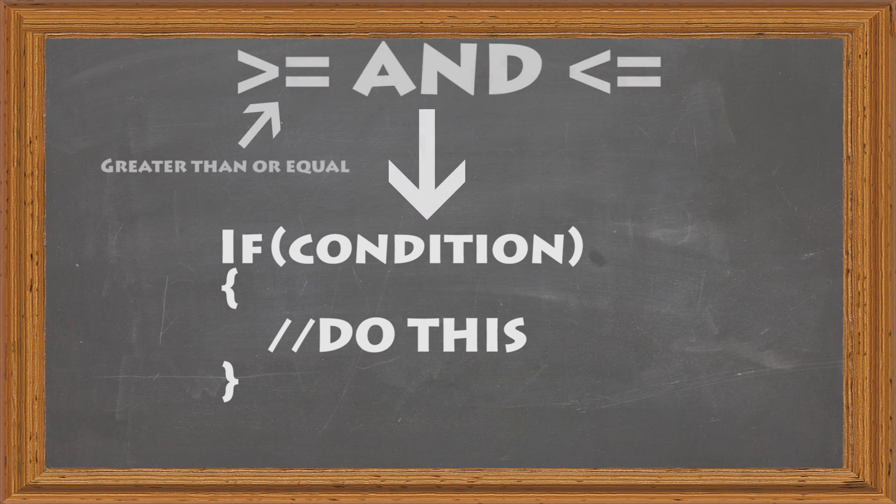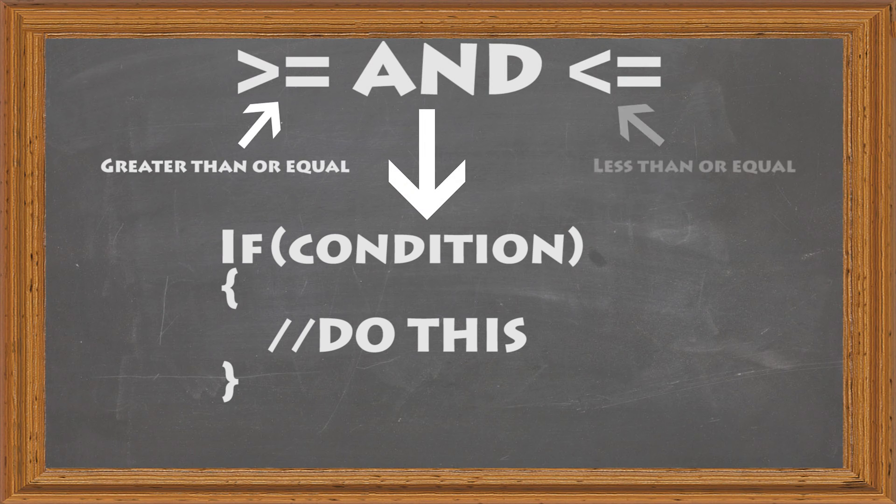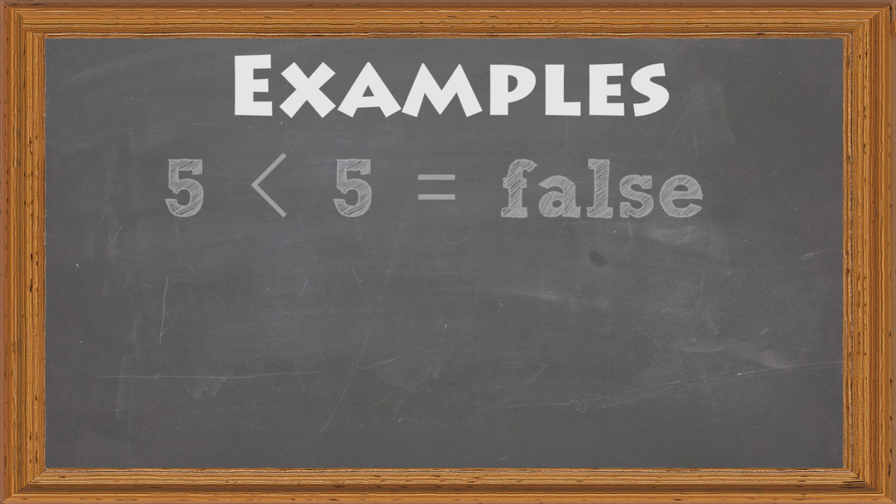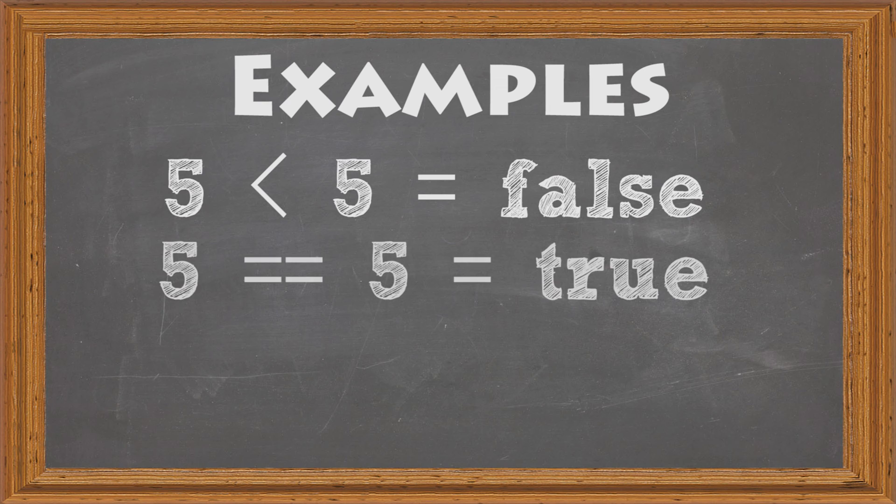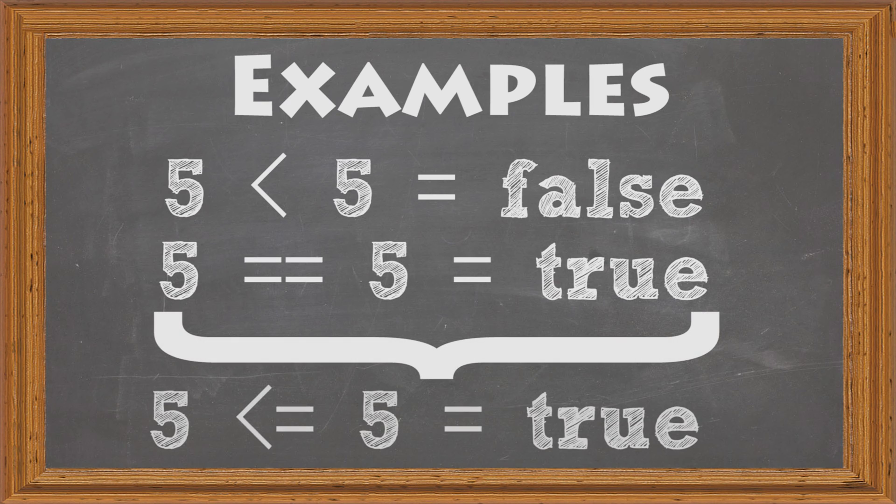Now we have the greater than or equal operator and the less than or equal operator. These are basically the same as the less than and greater than operators, but these will also evaluate to true if the numbers are equal to each other. For example, five is not less than five, but five is equal to five, so five is less than or equal to five will evaluate to true because it's not less than, but it is equal to five.